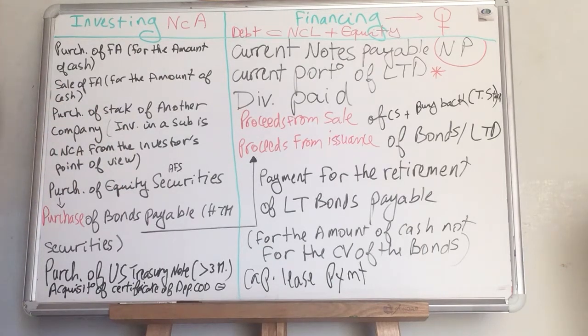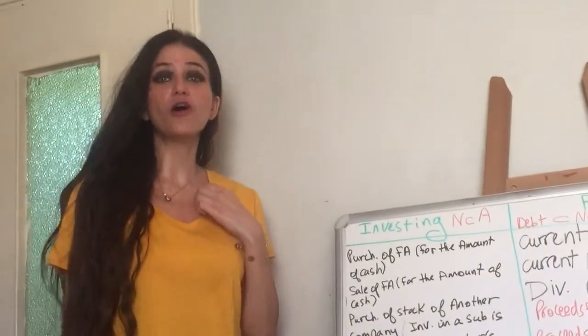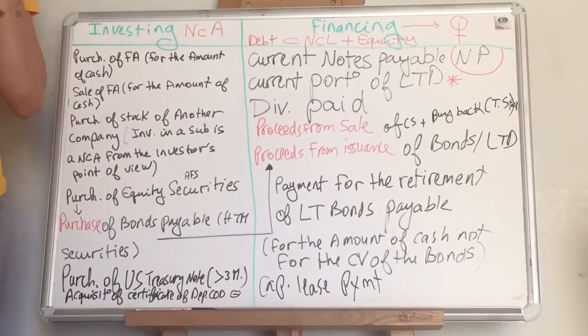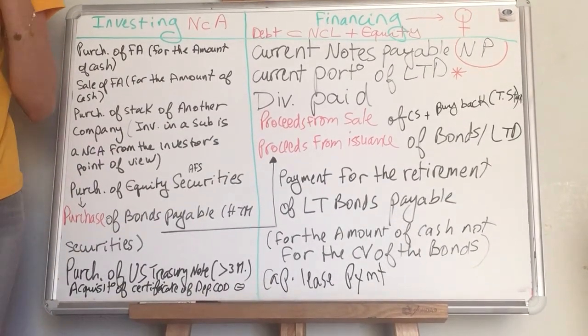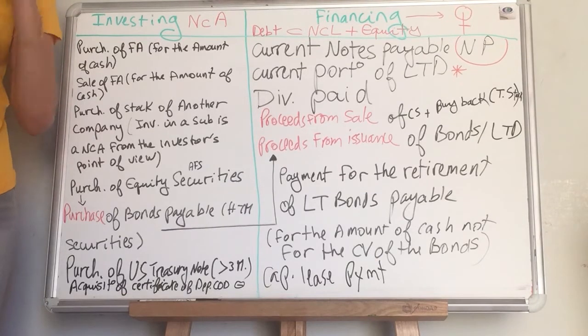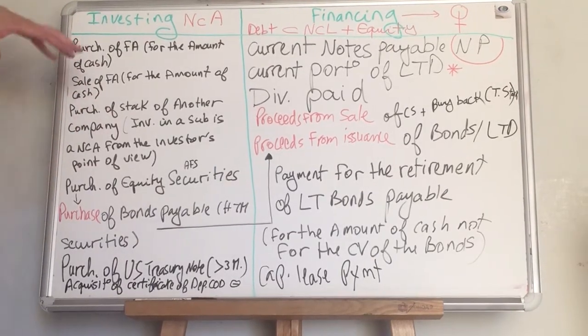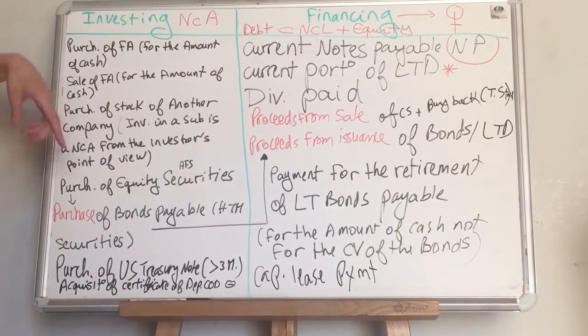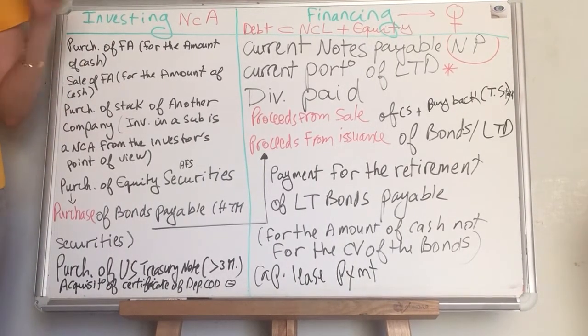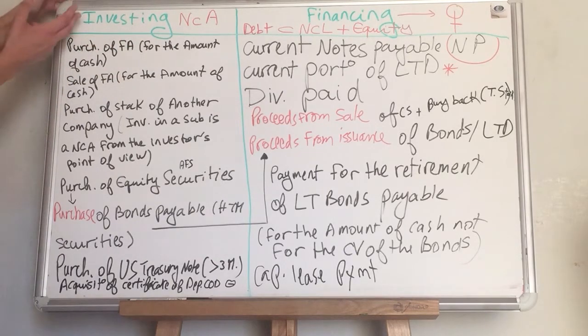For example: I'm the orange company — the investor. Orange company purchased stock in gray company. From the point of view of orange company, this is an investment in a subsidiary. The subsidiary is gray company. This is reported in the investing section. If I'm purchasing stock in gray company for $10,000, that $10,000 is reported in the investing section.